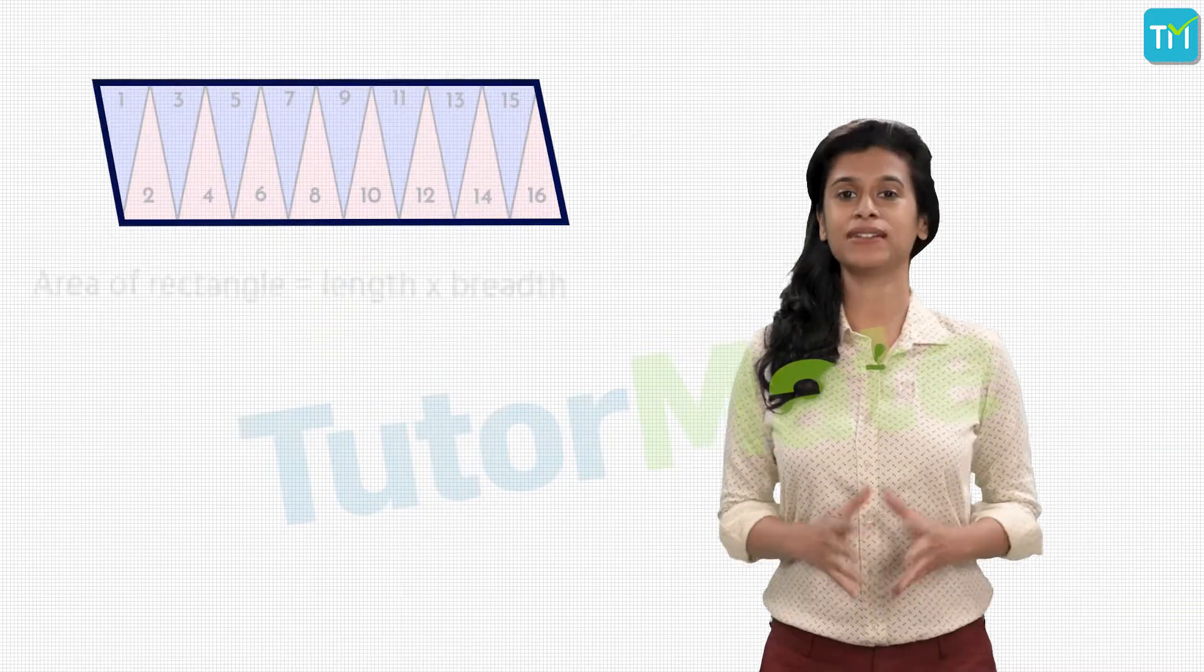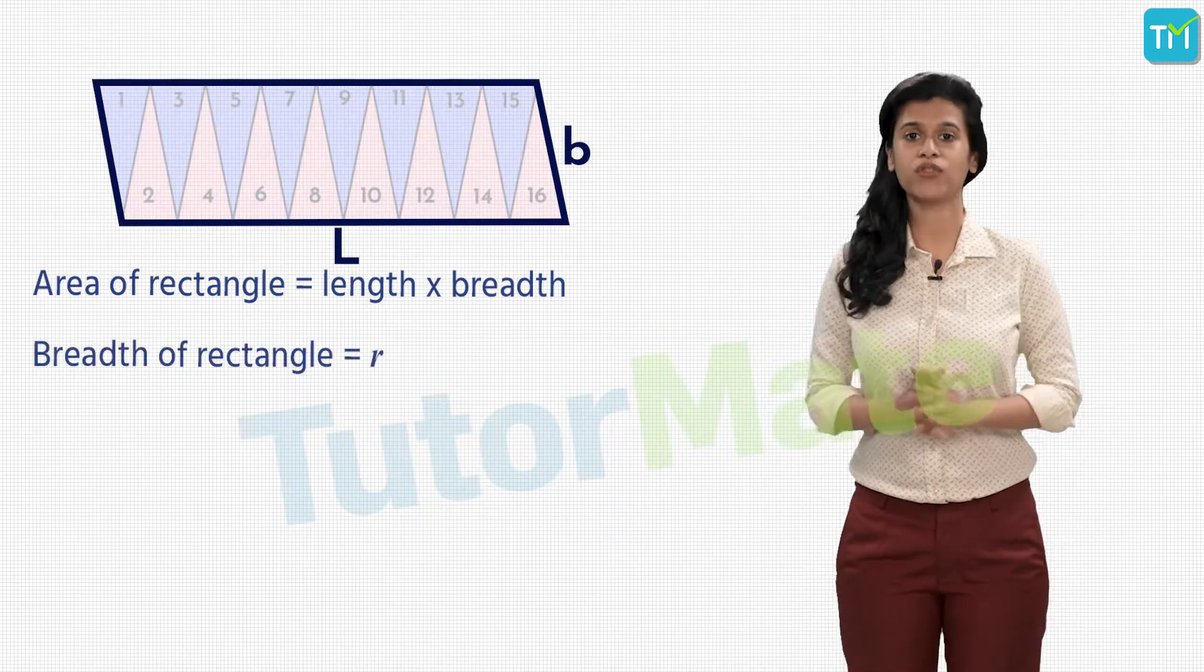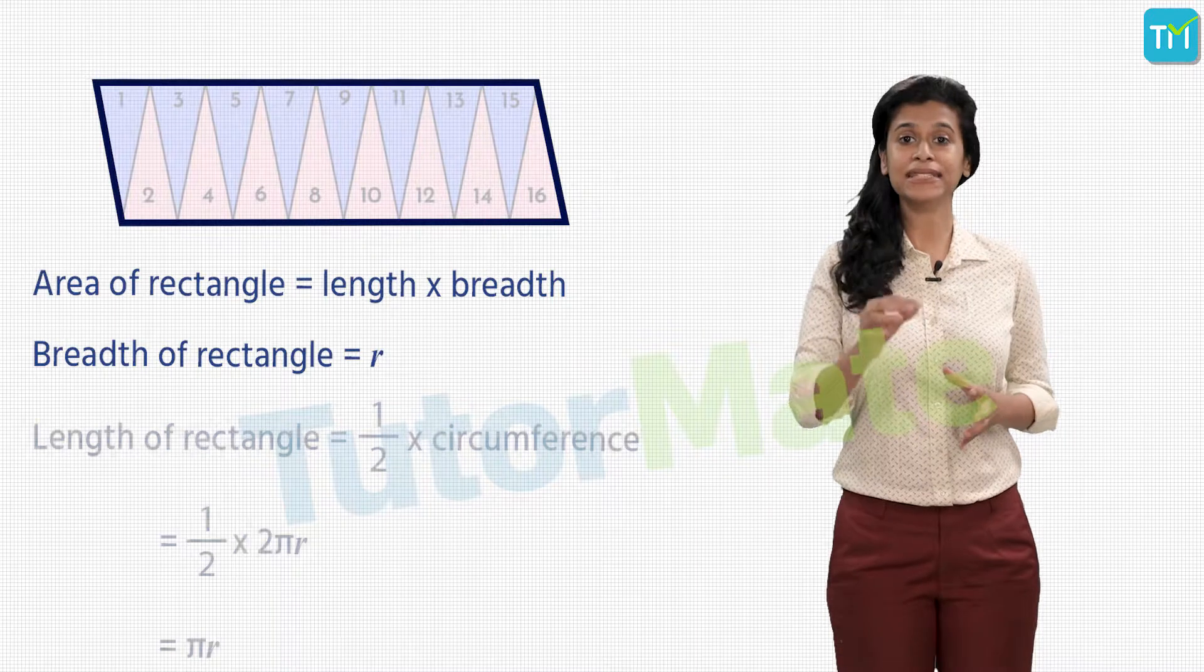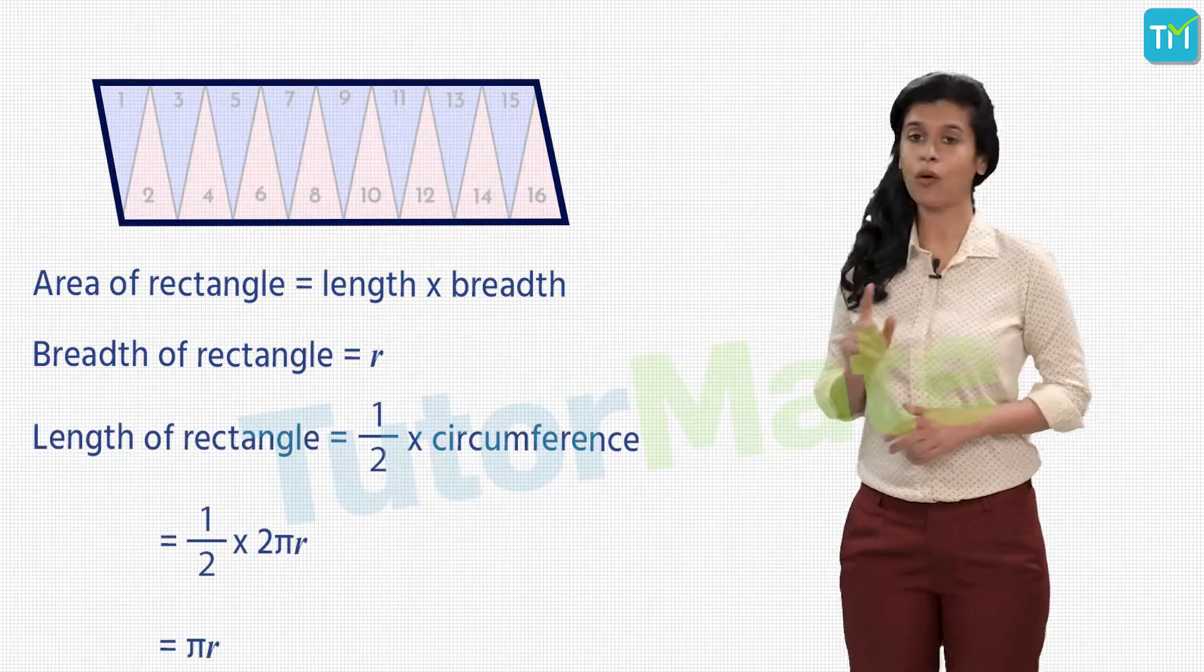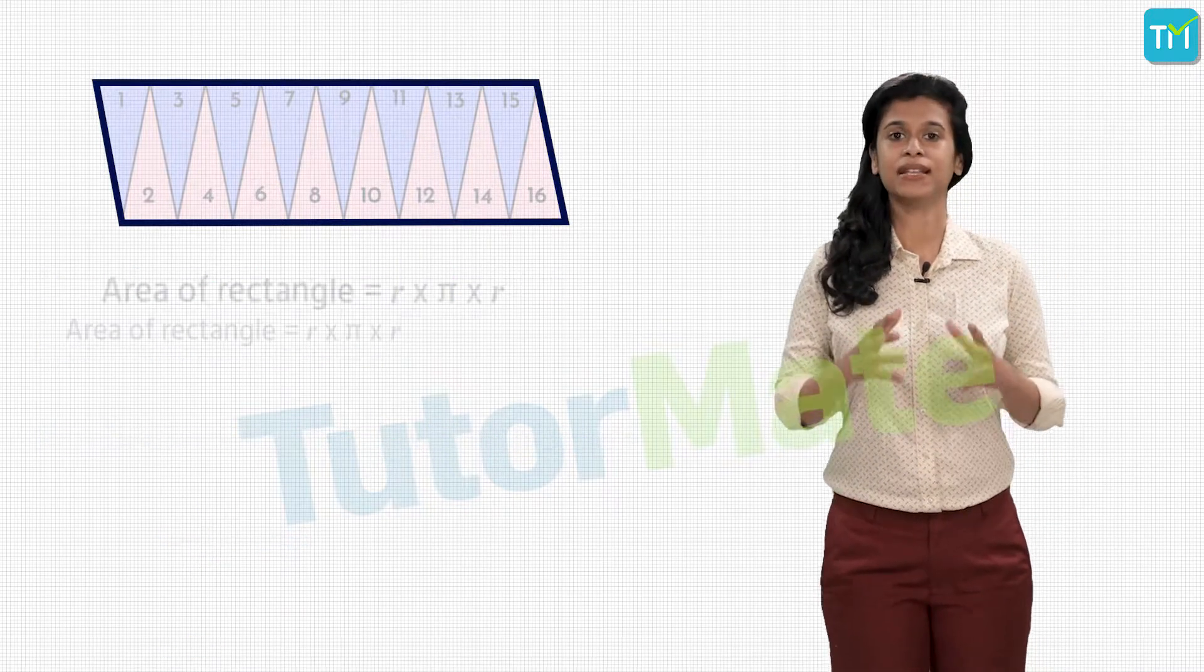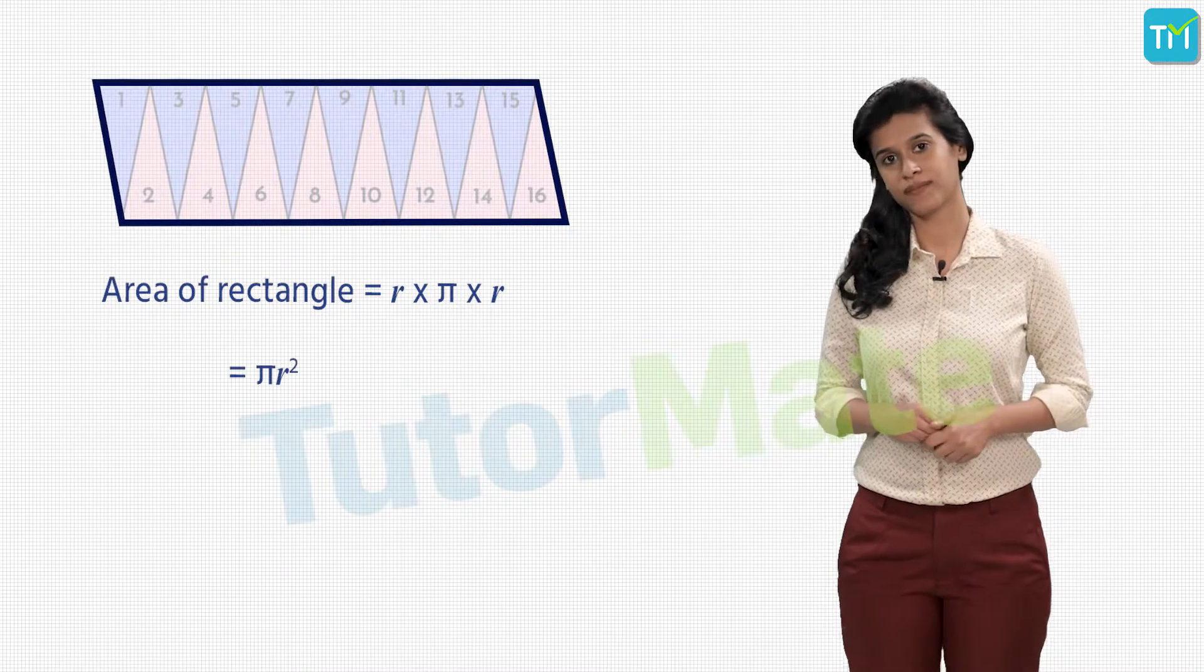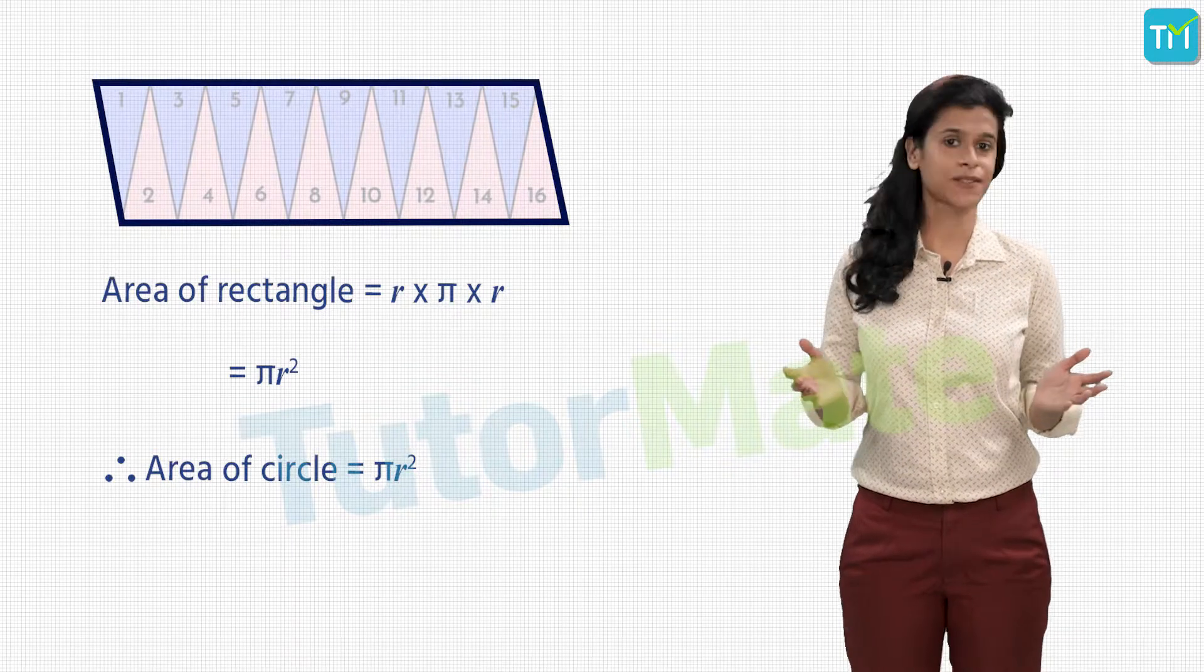We know the area of a rectangle is length times breadth. Here the breadth is the circle's radius r, and by the way the sectors have been arranged, we can see that the length is half of the circumference, which is half of 2πr or πr. So we get the area of the rectangle as r times πr, that is πr². Therefore, the area of the circle is given by the formula πr².